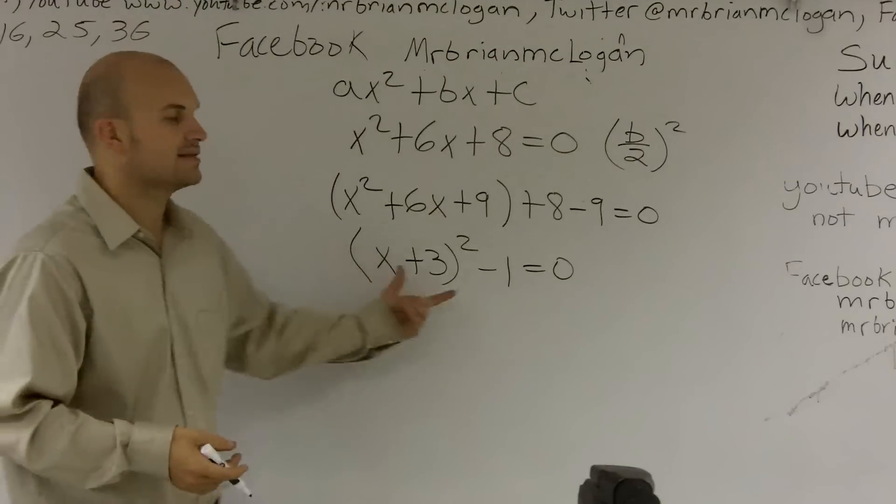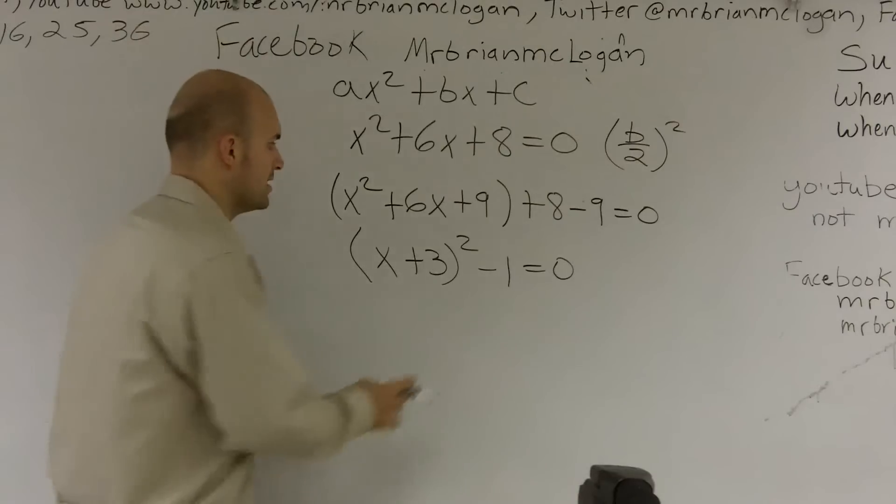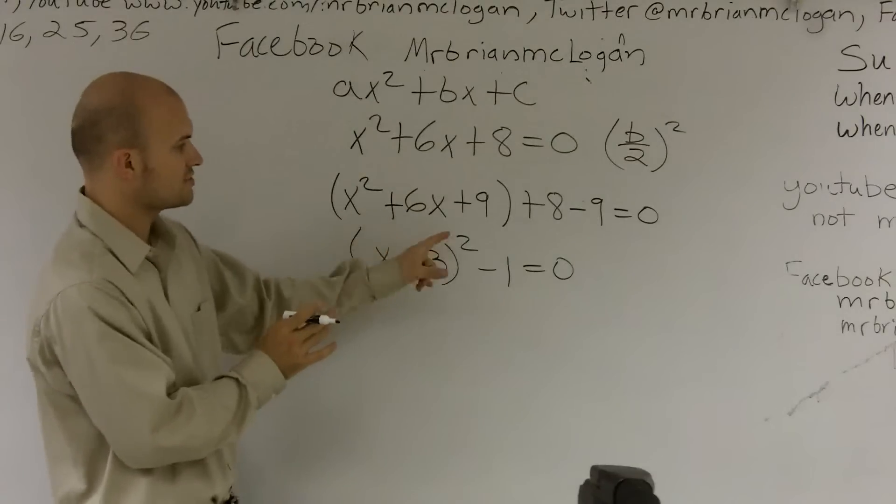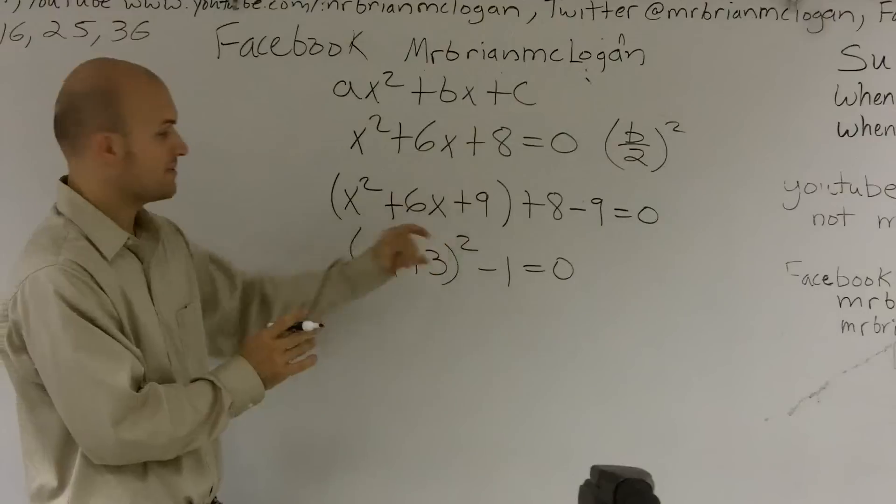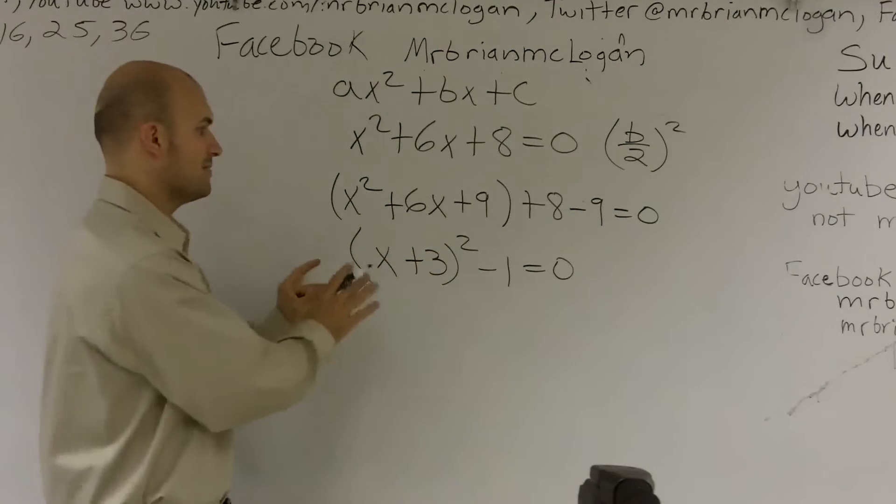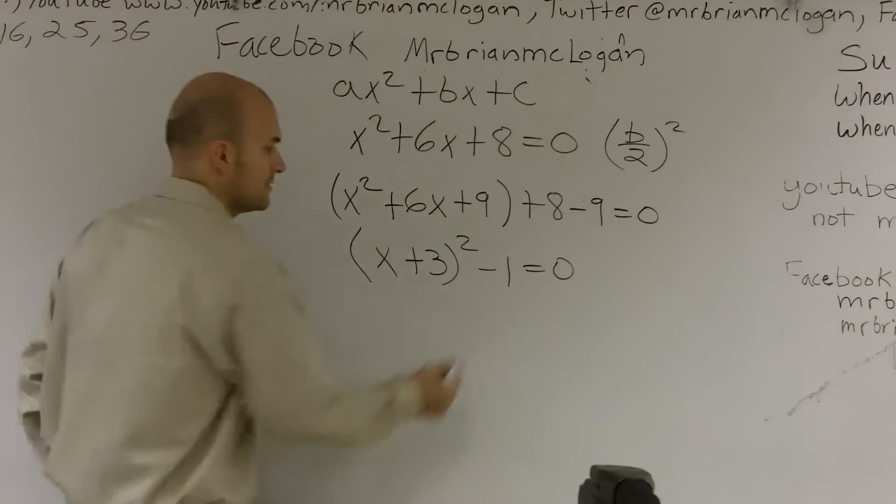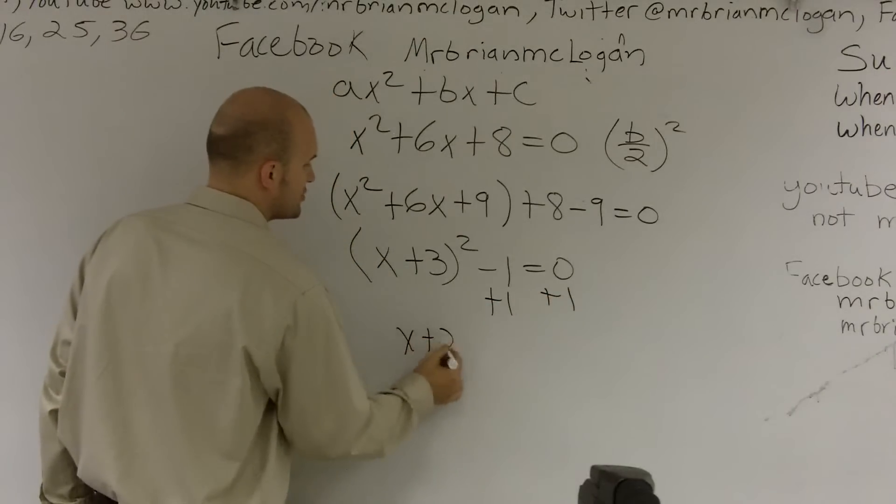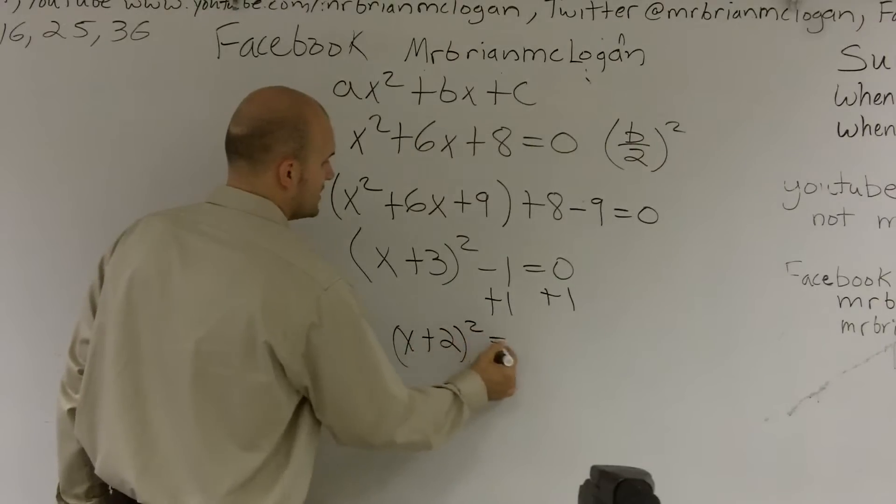Now, from here, I can now solve using my—solve to get rid of my square, because I'm going to have to use an inverse operation on the square. So I'm going to want to make sure I get everything away from that side. So I add a 1 to both sides. And now I have x plus 3 squared equals 1.